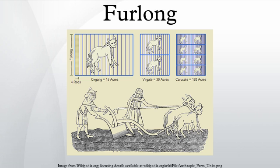The name furlong derives from the Old English words furh and lang. Dating back at least to early Anglo-Saxon times, it originally referred to the length of the furrow in one acre of a ploughed open field. The system of long furrows arose because turning a team of oxen pulling a heavy plough was difficult, which offset the drainage advantages of short furrows and meant furrows were made as long as possible.